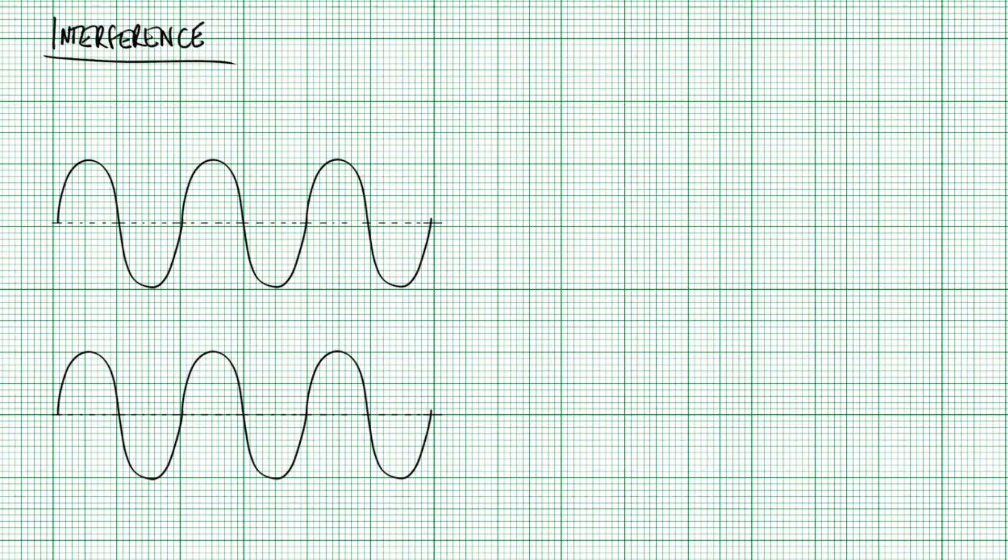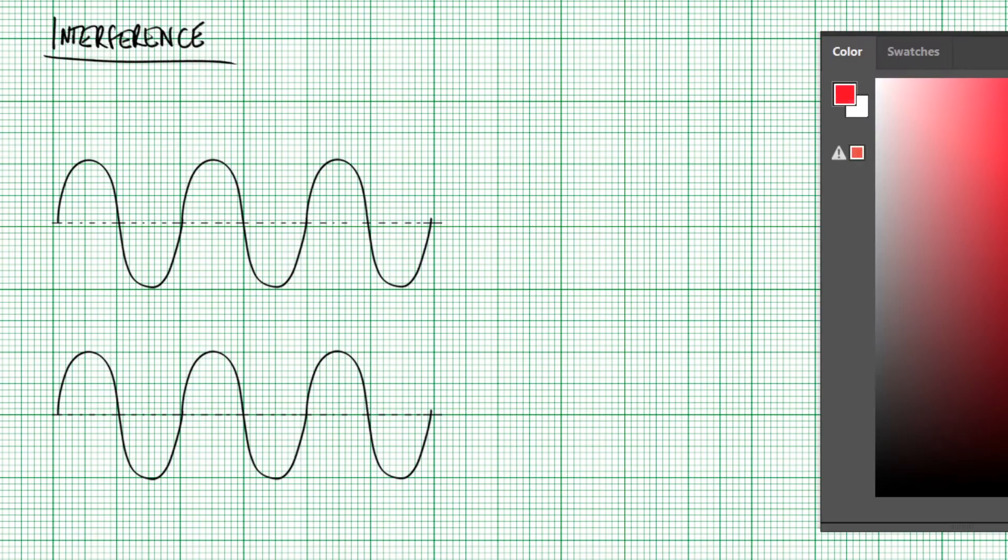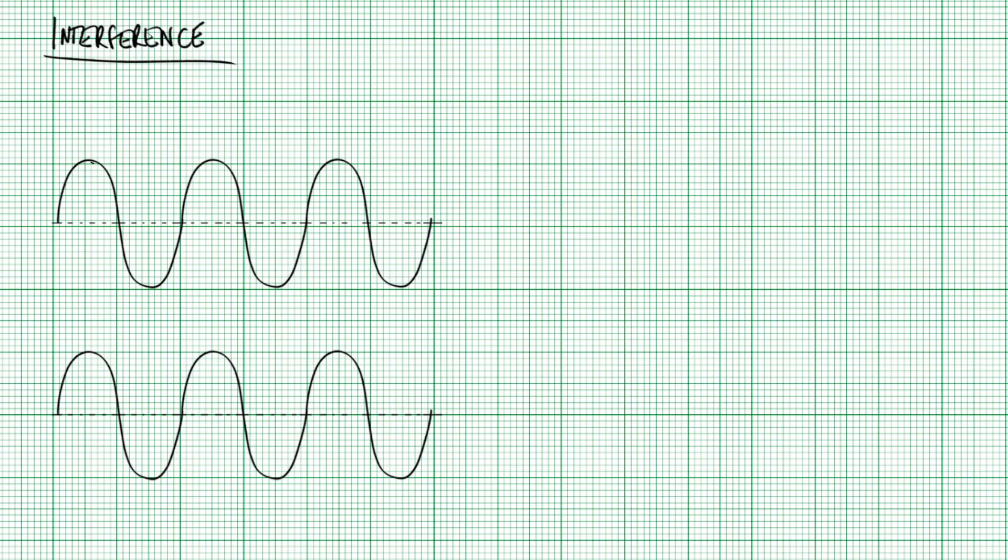Interference is something which is noticed when waves come into contact with each other. So what I've got here is I've got two sets of waves and one of the things that's really important about this diagram is that we notice that the crest from this wave is actually meeting the crest from that wave. The troughs are meeting there and that pattern continues. So the crests meet crests and troughs meet troughs.